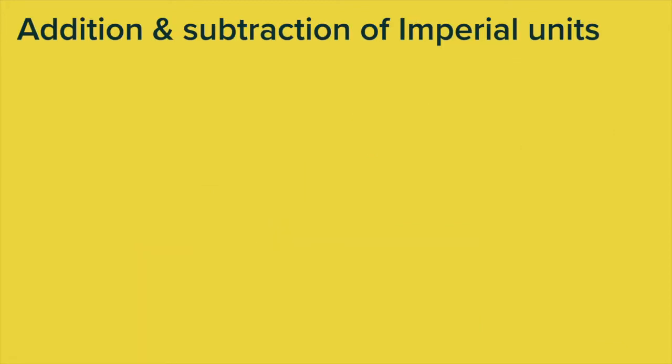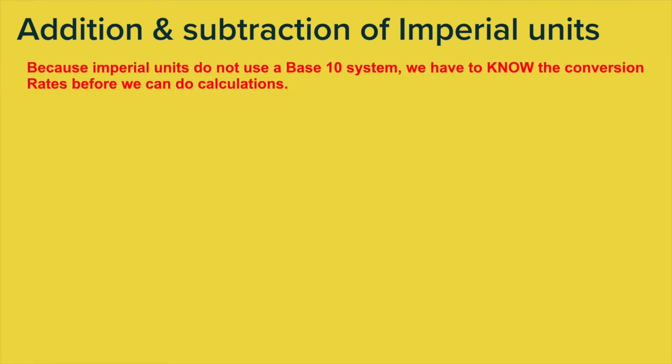Addition and subtraction of imperial units. Because imperial units do not use a base 10 system, it's a little bit more tricky to do what we would normally find quite easy with addition, subtraction, etc. Because imperial units are all different, we have to know each conversion rate so that we can do any calculations. It's very important you know what the conversion rate is.